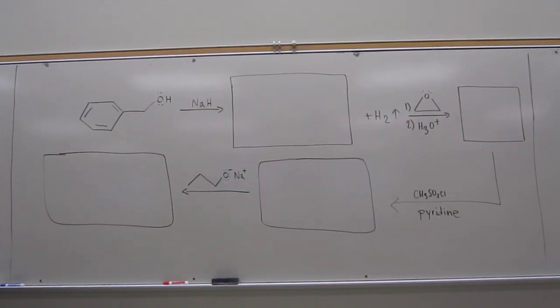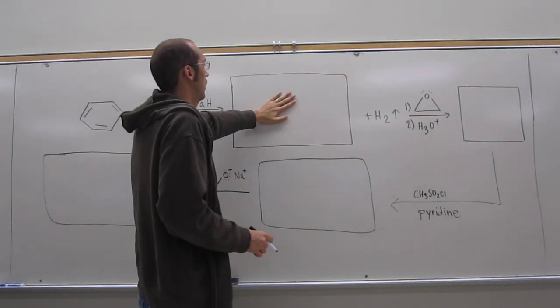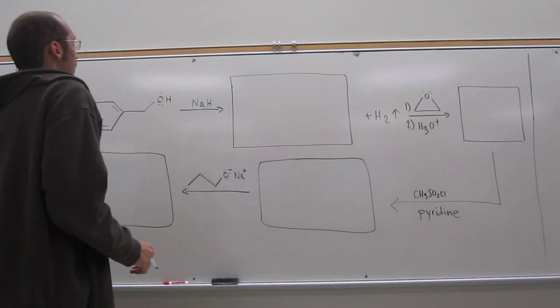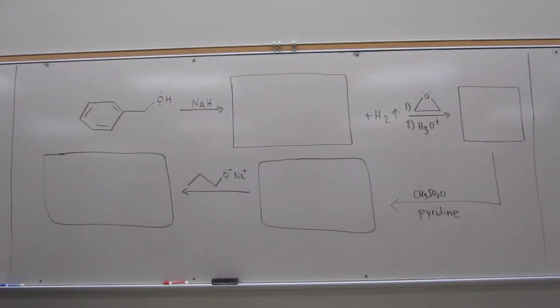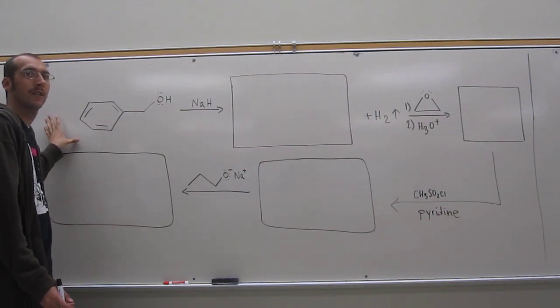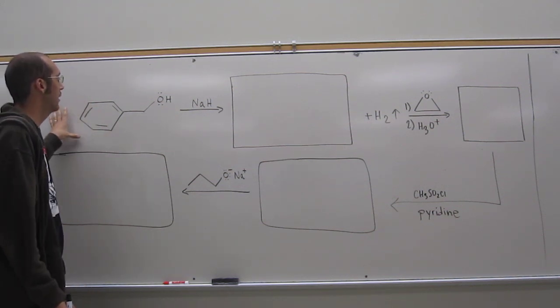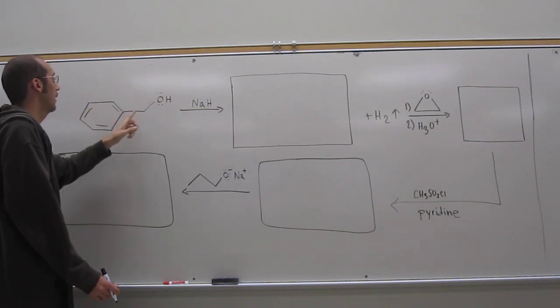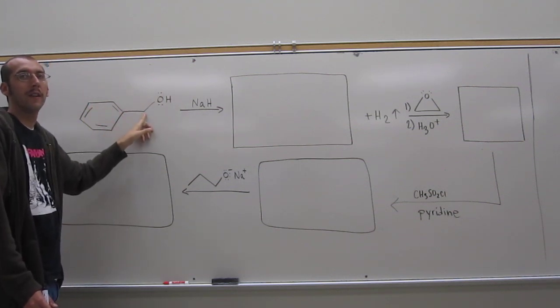So let's do this problem. Can anybody tell me what the first intermediate is here? It's going to be the, what is that thing called? The phenol? Well, you're talking phenol. But this is not a phenol, right? Phenol has the OH here, not there.